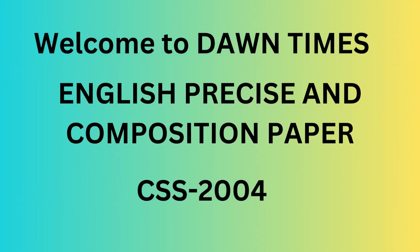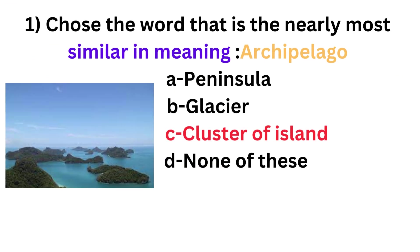Hello audience, welcome to Dawn Times. Today we will discuss the English Precis and Composition paper of CSS 2004. In this section I will focus only on synonyms and antonyms. The first one is: choose the word that is nearly most similar in meaning to 'archipelago'.